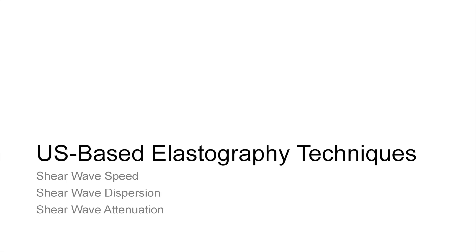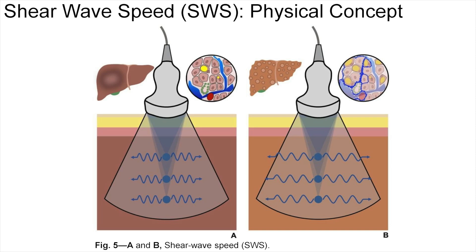Ultrasound-based elastography techniques include shear wave speed, shear wave dispersion, and shear wave attenuation. Shear waves are transverse waves that consist of alternating shearing motion of tissue propagating in the direction perpendicular to the direction of the source wave. Shear wave speed measures the velocity of shear wave propagation and is used to assess liver stiffness. Shear wave speed is increased in liver fibrosis, as seen in image B, compared to normal liver in image A.